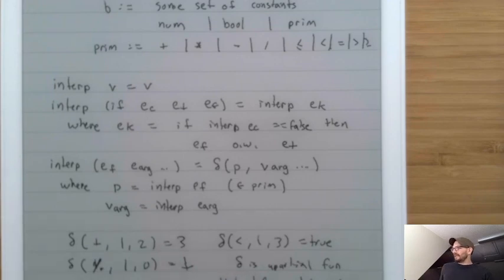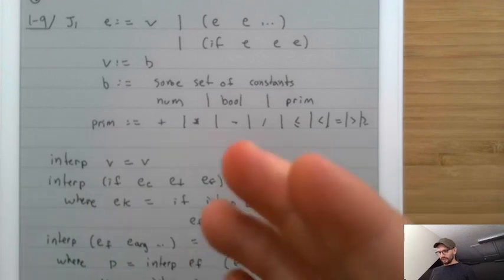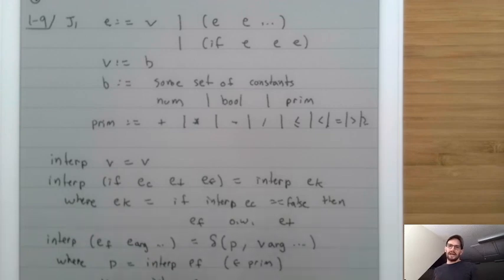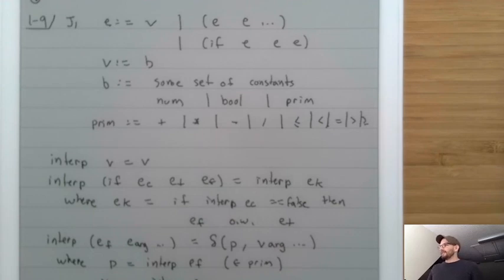In the assignments, define a data structure to represent J1 — similar to what we showed for J0. Write a test suite of example programs, extend your de-sugarer to output J1 expressions and support multi-ary addition, and implement the interp function on the expanded language. That's enough for now — we'll see you next time.